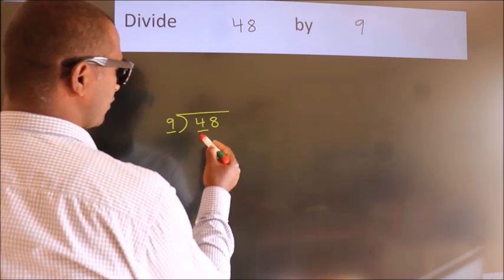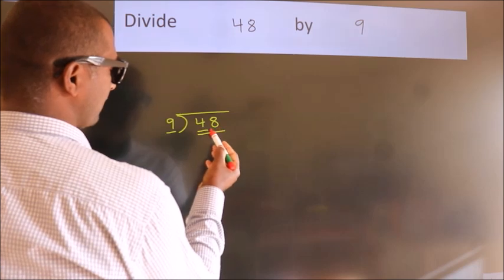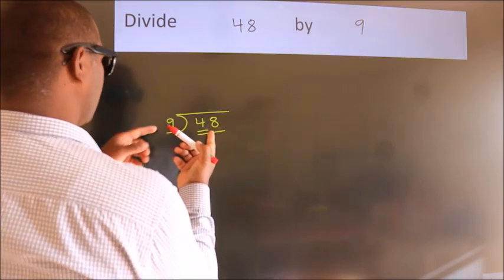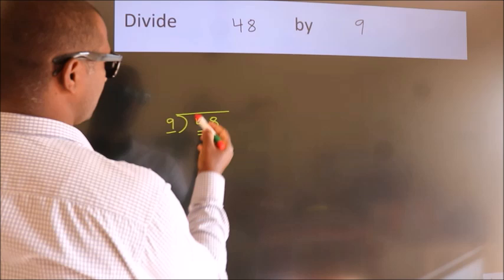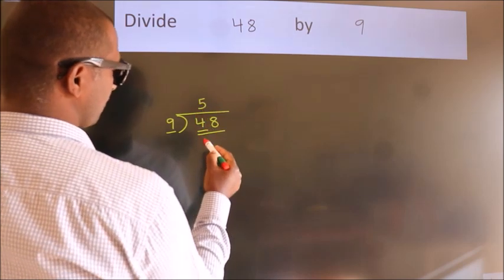So, we should take two numbers. 48. A number close to 48 in the 9 table is 9 fives, 45.